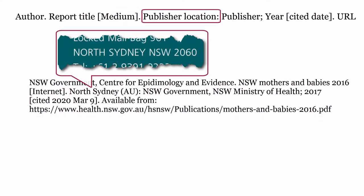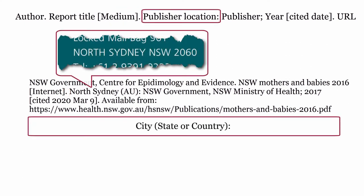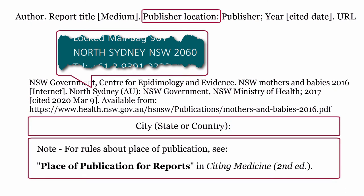Publisher location: where the publisher is based. The publisher's location is formatted using the city, then the state or country, enclosed within round brackets. This is followed by a colon. For rules about place of publication, see place of publication for reports in Citing Medicine, second edition.